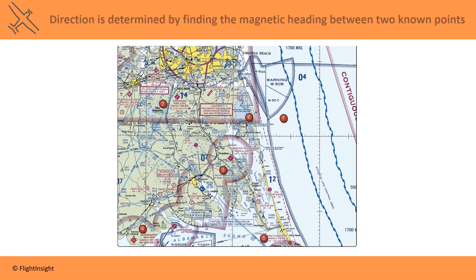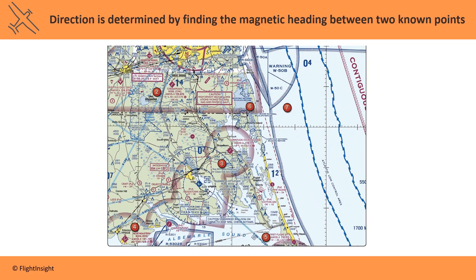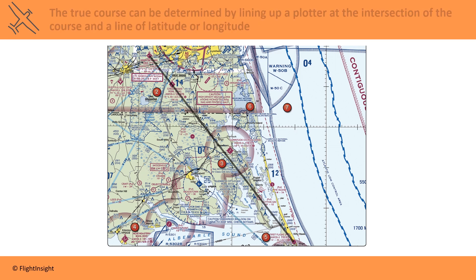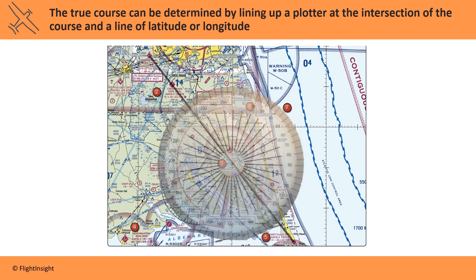Direction is determined by finding the magnetic heading between two known points. Let's say we're flying from First Flight Airport down in Area 5 on the chart to Hampton Roads in Area 2. The first step is to plot a straight line between these two points. The true course can be determined by lining up a plotter at the intersection of the course and a line of latitude or longitude. We'll line up the center hole of the plotter with the point where the line we drew intersects the line of longitude, then read our true course as 320 degrees.